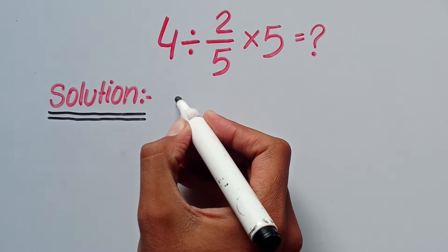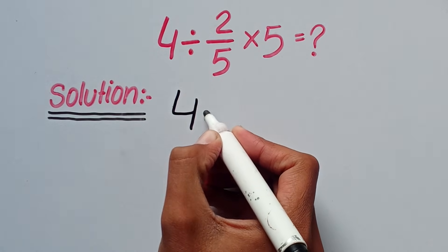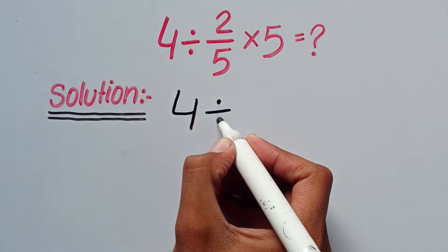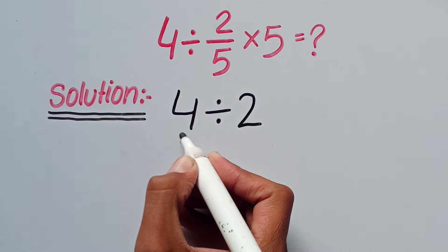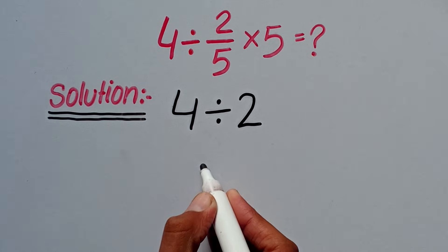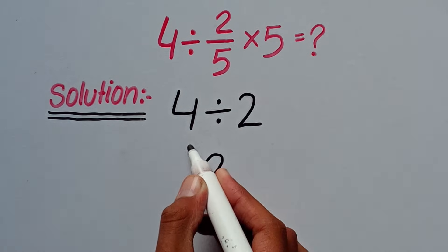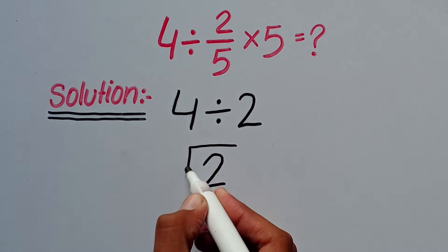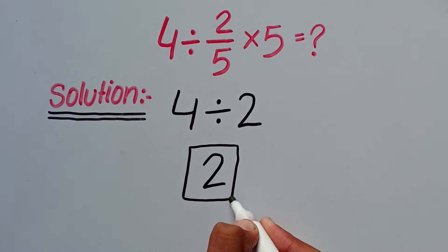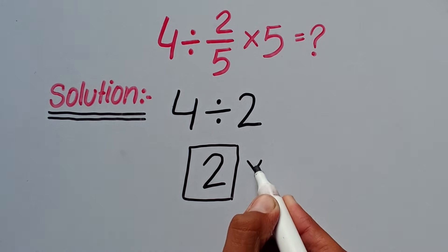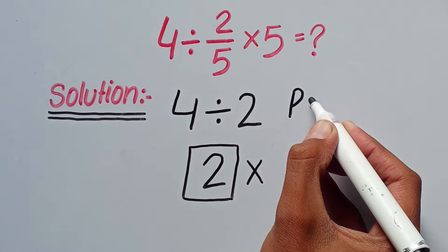They write 4 divided by 2 and conclude that 4 divided by 2 equals 2. But trust me, this answer is absolutely wrong because of the order of operations, which is called PEMDAS rule.